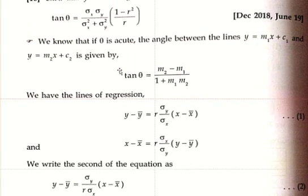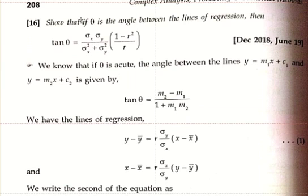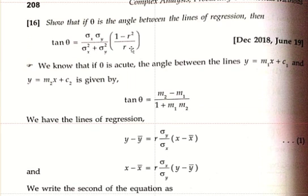Next, show that if theta is the angle between the lines of regression, then tan theta is equal to sigma x into sigma y divided by sigma x squared plus sigma y squared, into 1 minus r squared by r.